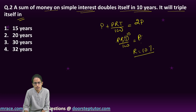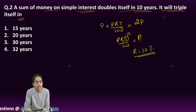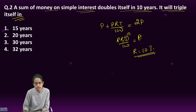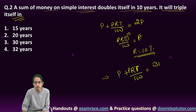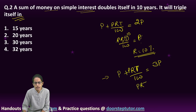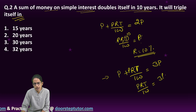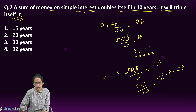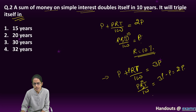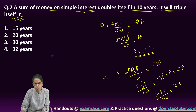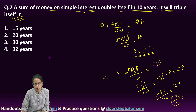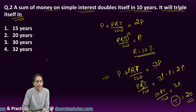Now, in how many years would it triple? In the second equation I build: P + PRT/100 = 3P, so PRT/100 = 2P. My rate is 10, and cancelling P, I have 10T/100 = 2. Solving, I get T = 20 years. So for simplicity I can write it as T1 and T2.